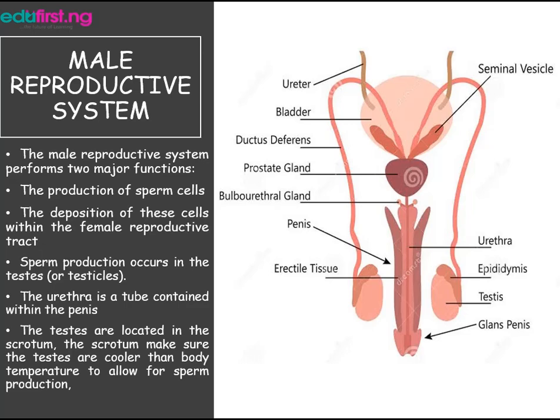Sperm moves through the sperm ducts and the urethra. The urethra is a tube contained within the penis. The penis's major function is to ensure a link is made for the sperm to get to the female reproductive system through the vagina. The accessory glands — seminal vesicles and the prostate gland — provide fluid that lubricates the duct system and nourishes the sperm. This liquid and the sperm cells constitute semen.